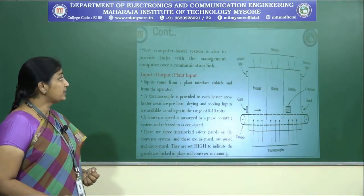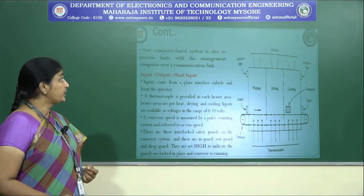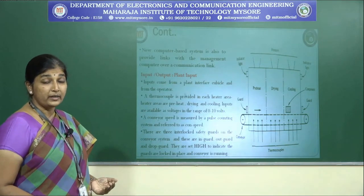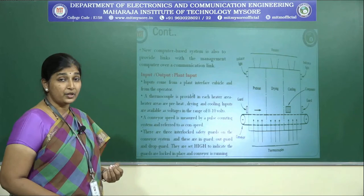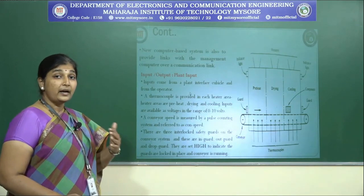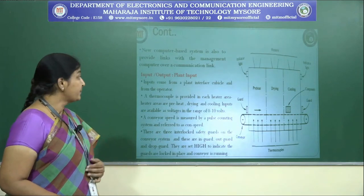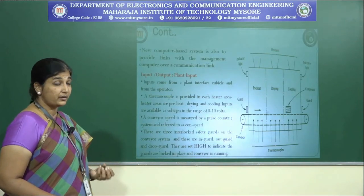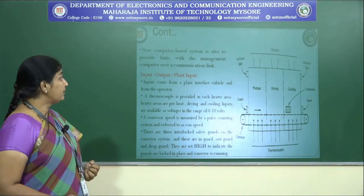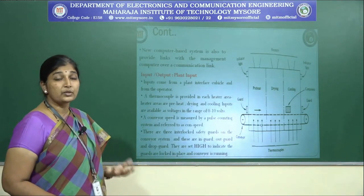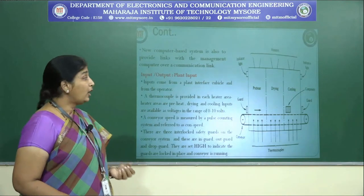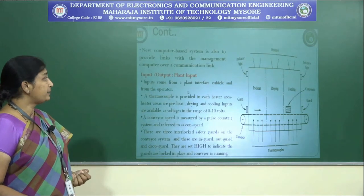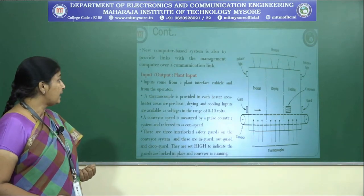A new computer-based system also needs to provide links with the management computer over a communication network. The communication link between systems is very important — the kind of communication link, the distance, and the kind of operation it will be used for. The drying oven has certain inputs and outputs that must be defined in any methodology. Inputs come from a plant interface cubicle and from the operator.